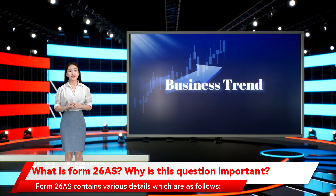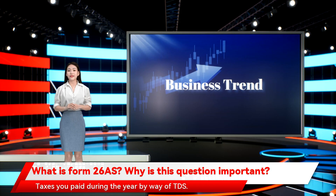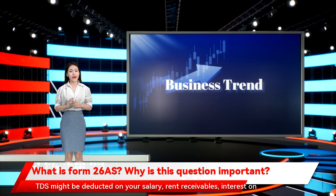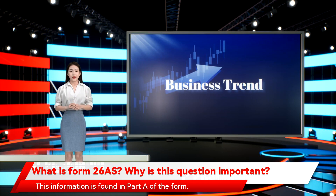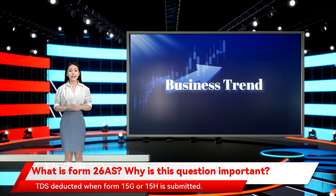Form 26AS contains various details which are as follows. Taxes you paid during the year by way of TDS — TDS might be deducted on your salary, rent receivables, interest on deposits, etc. This information is found in Part A of the Form. TDS deducted when Form 15G or 15H is submitted is found in Part A1 of the Form.